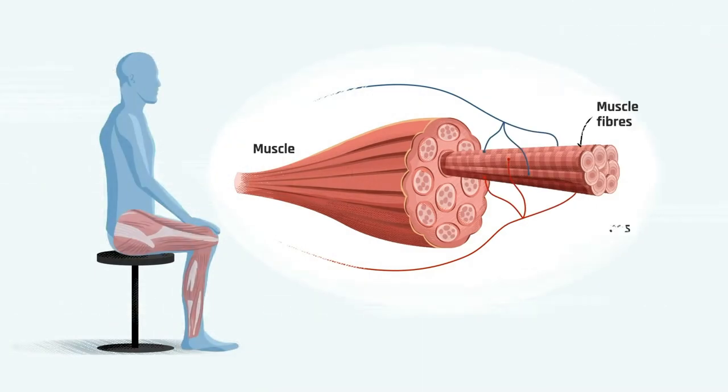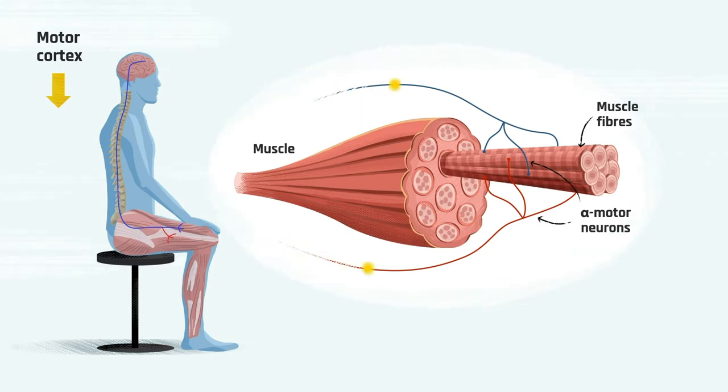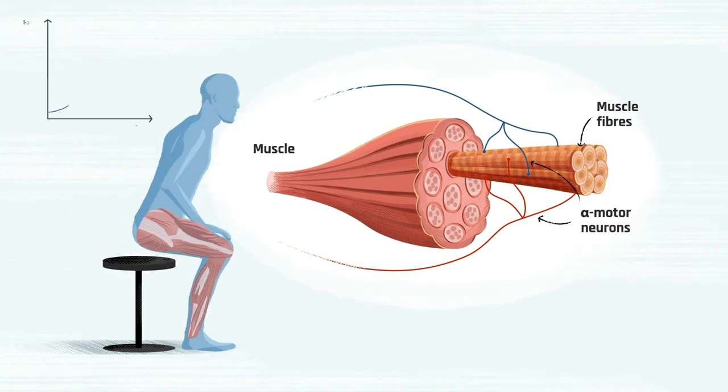Muscles consist of bundles of fibers, innervated by motor neurons. Upon receiving a signal from the brain, the motor neurons activate these fibers, causing them to contract and generate force.